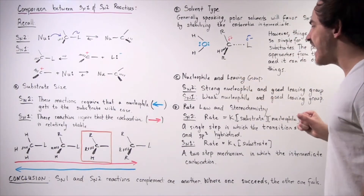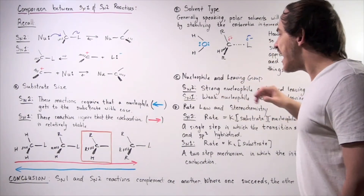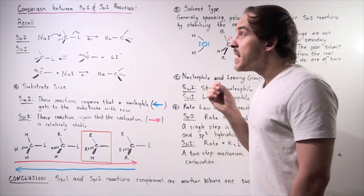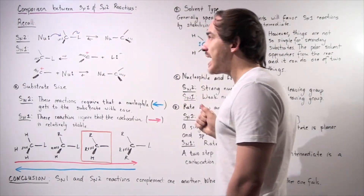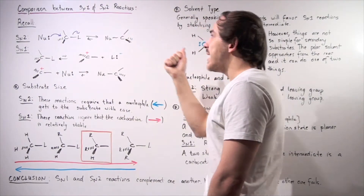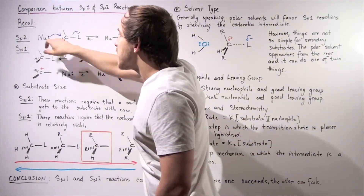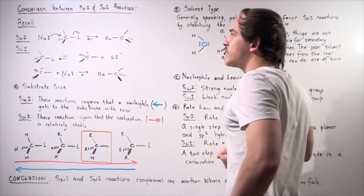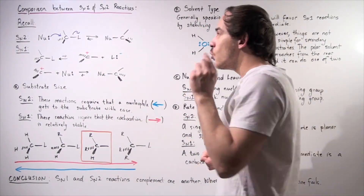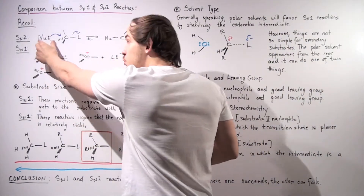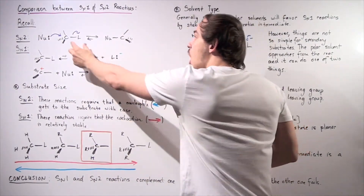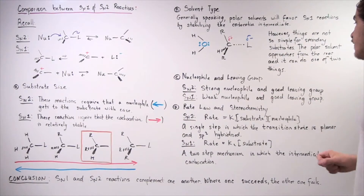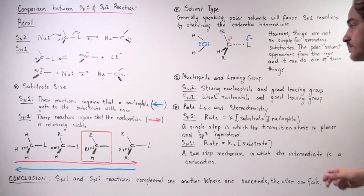In SN2 reactions, we need a strong nucleophile. Because in our SN2 reaction, we have a one-step mechanism in which the lone pair attacks the carbon displacing and kicking off the leaving group. So we need a good strong nucleophile as well as a good leaving group. SN2: strong nucleophile and good leaving group.